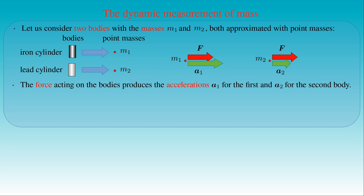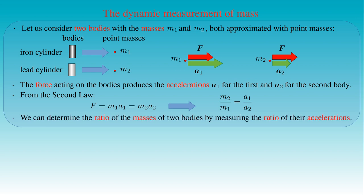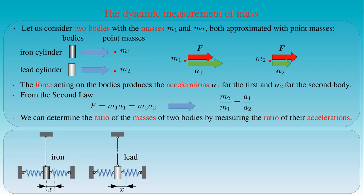Therefore, the magnitude of force F equals M1 times A1, which also equals M2 times A2. It follows that the ratio of the masses is inversely proportional to the ratio of the accelerations — that is, M2/M1 = A1/A2. As a result, we can determine the relationship between the masses of two bodies by measuring the ratio of their accelerations produced by a given force. That can be done in the experiment with suspended cylinders attached to two springs, provided the mass of the springs is negligible. In this experiment setup, the acceleration of the cylinders at maximum amplitude is inversely proportional to the square of the period of their harmonic oscillation.